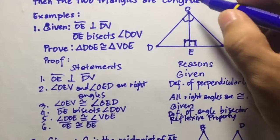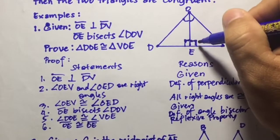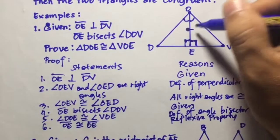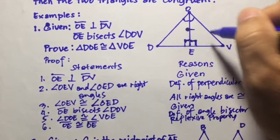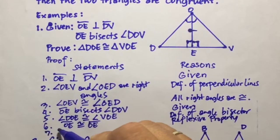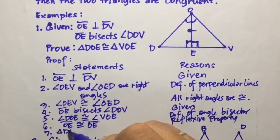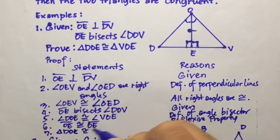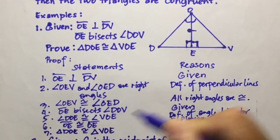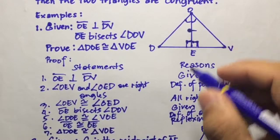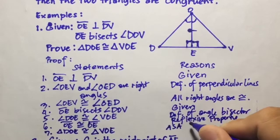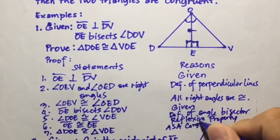We have proven that these two angles are congruent and the included side OE is congruent, so triangle DOE is congruent to triangle VOE. The reason is: ASA congruence postulate.